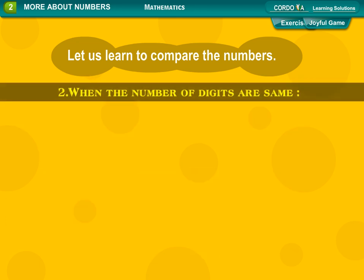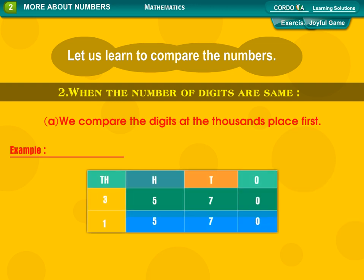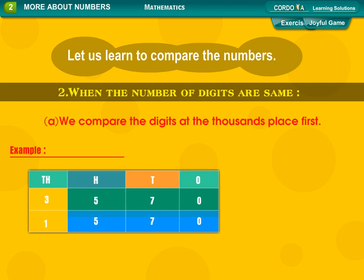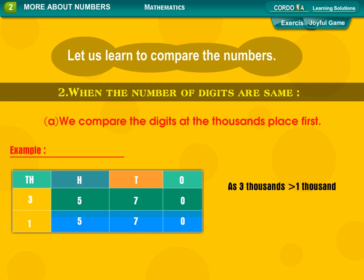When the number of digits are same, we compare the digits at the thousands place first. Example: TH, H, T, O. 3,570 and 1,570. As 3,000 is more than 1,000, so 3,570 is more than 1,570.